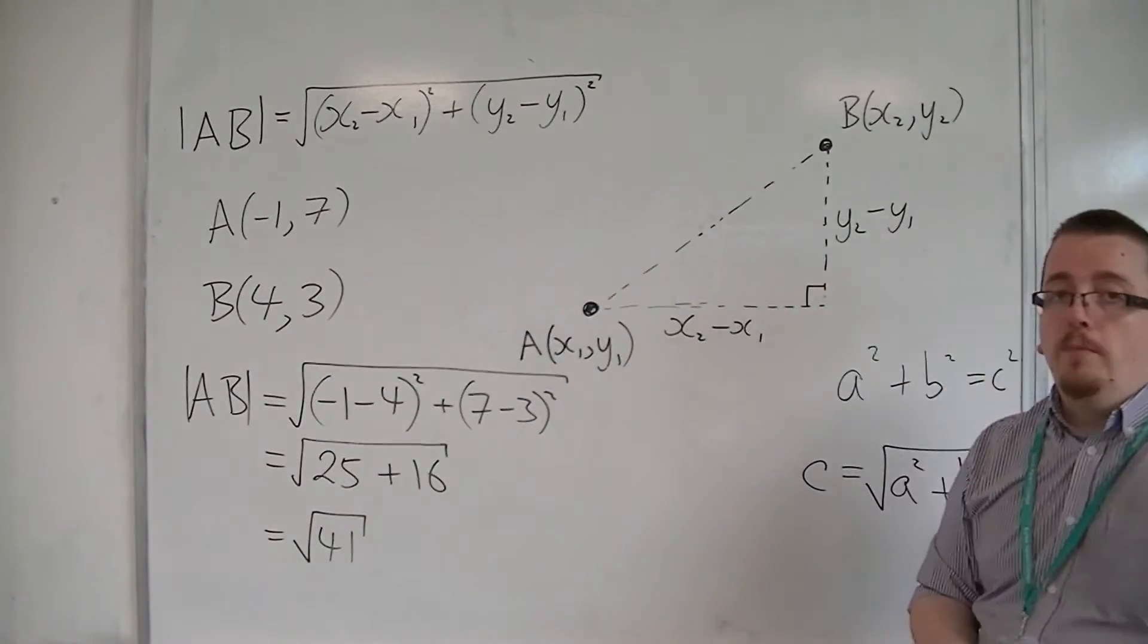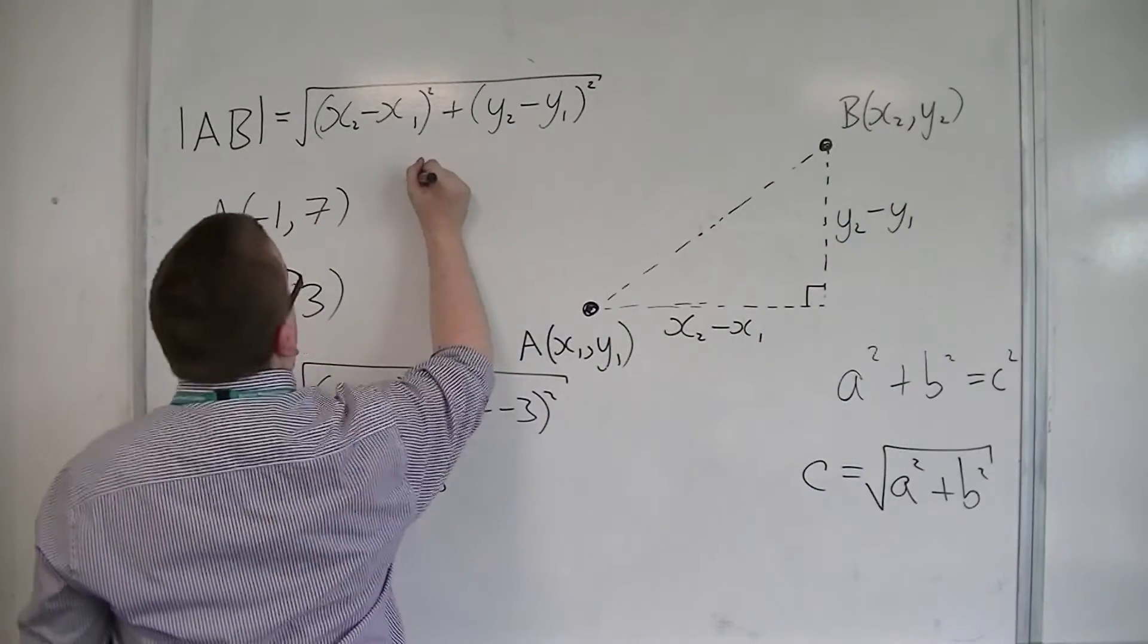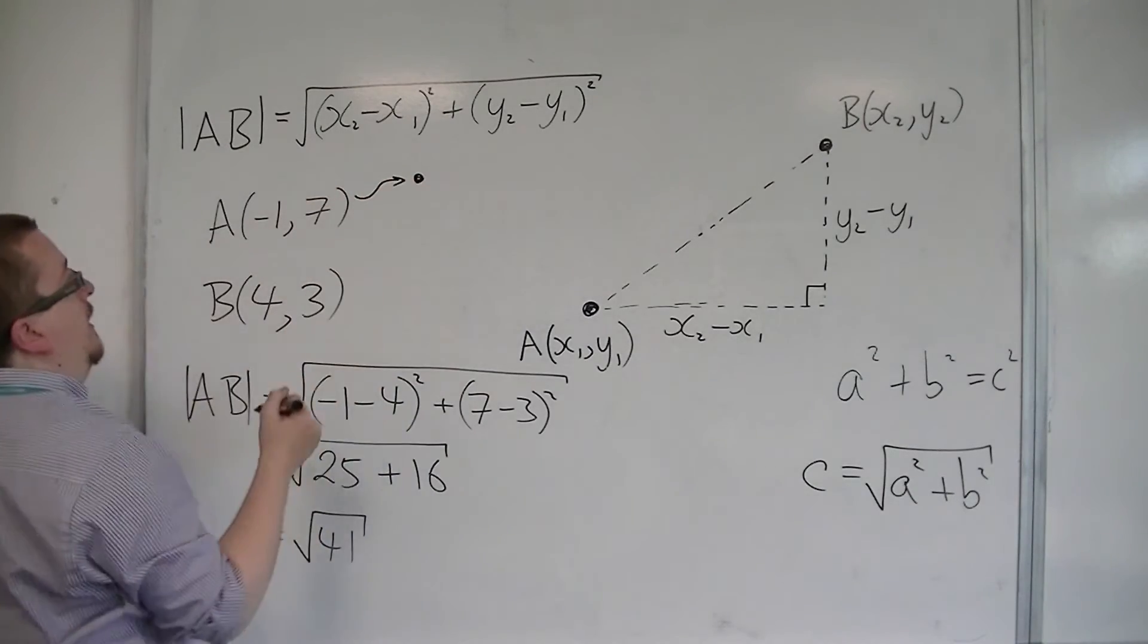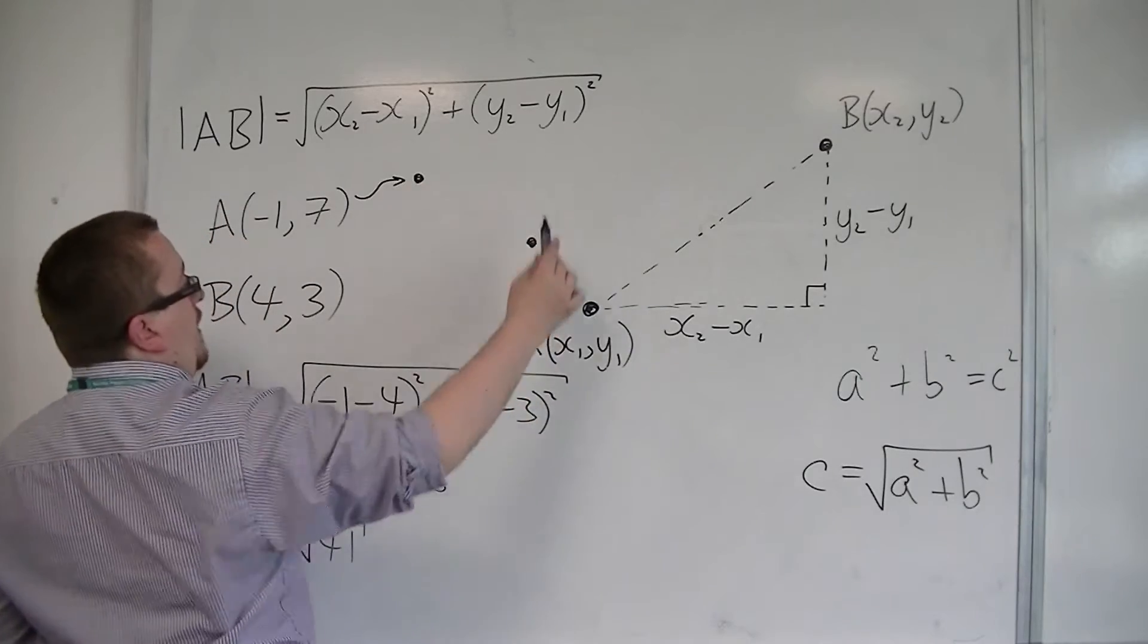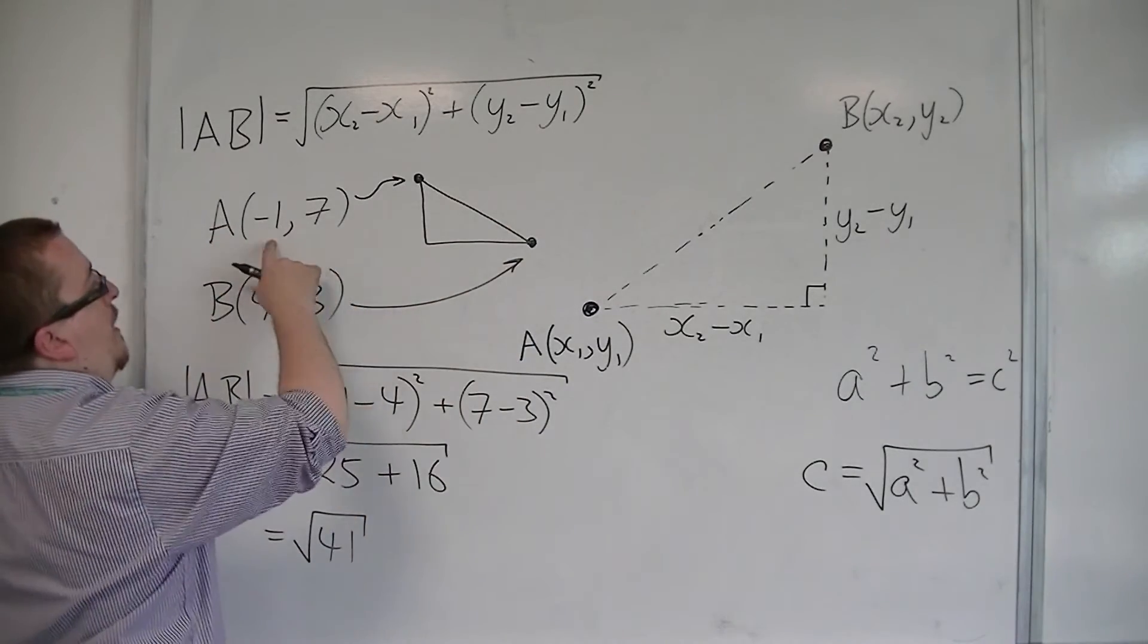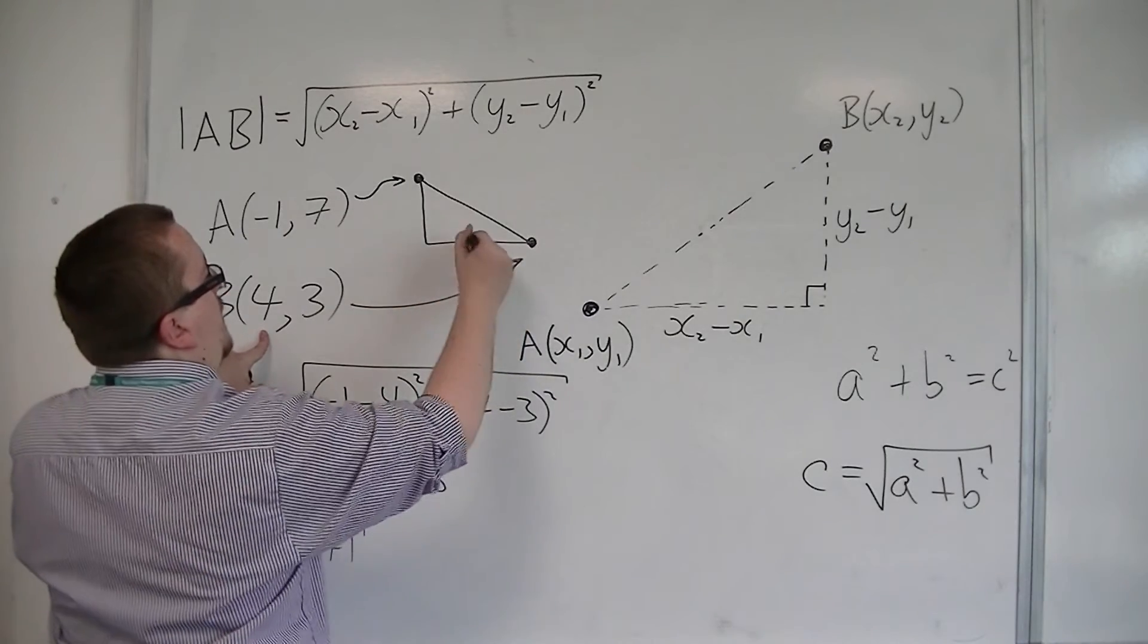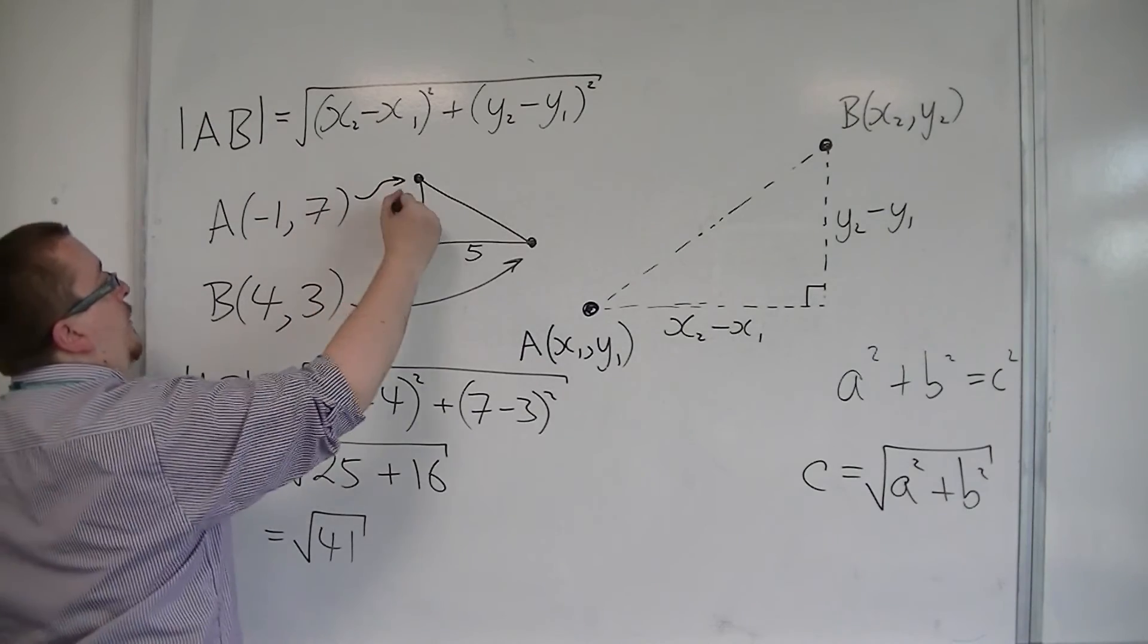Now, if you don't want to use it as a formula, you could always draw yourself a triangle, so minus 1, 7 is there, and then 4, 3 would be somewhere over here. So across and down, draw a triangle, so from minus 1 to 4 would be of length 5, and from 3 to 7, that's 4.